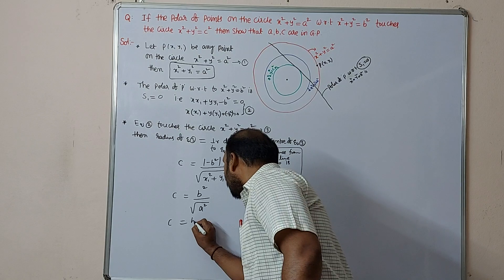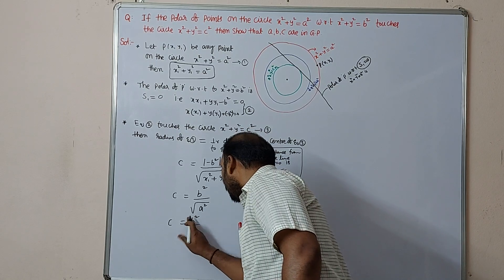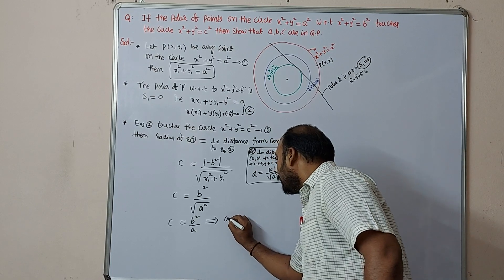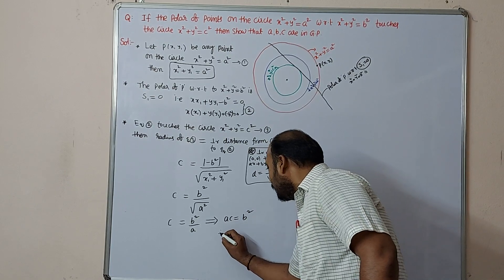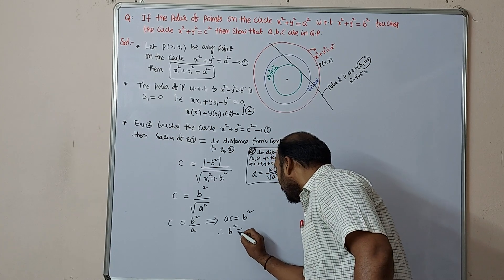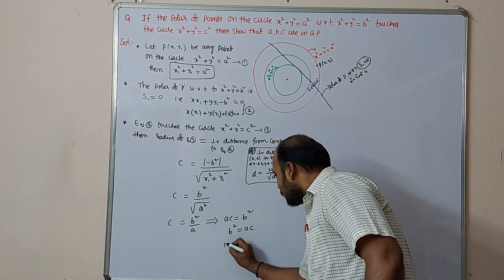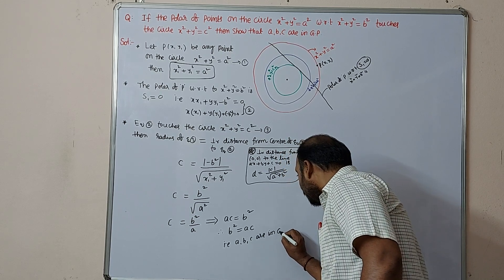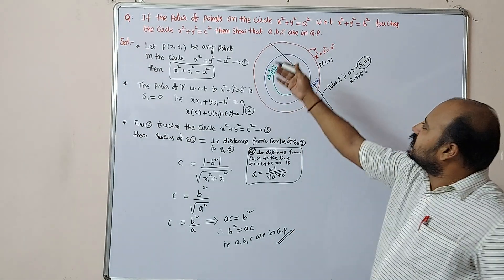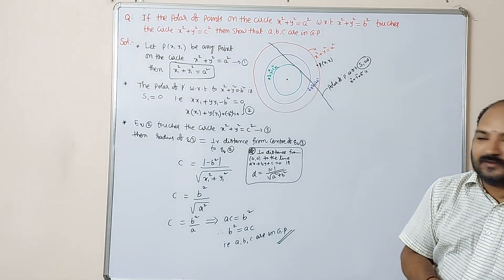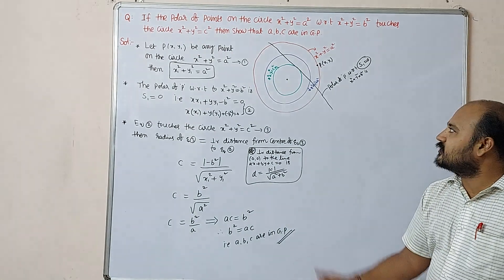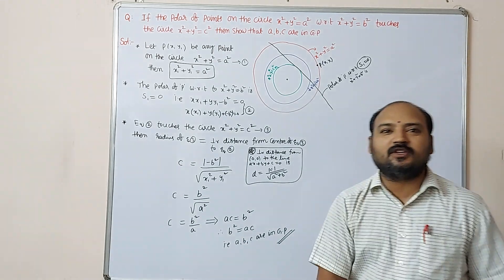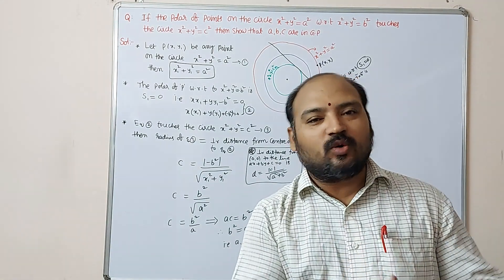Therefore c = b²/a, which gives b² = ac. This means a, b, c are in geometrical progression — which is exactly what we needed to prove. The diagram makes it easy to understand. Thank you for watching; if you like this video, please share it with your friends.